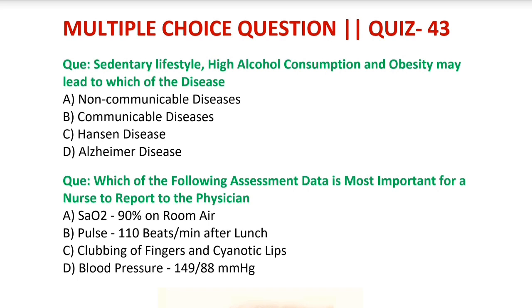Alzheimer's disease को senile dementia भी कहा जाता है — यानि कि बूढ़े लोगों में पागलपन. यह progressive disease होती है जो person की memory destroy कर देती है और mental function change कर देती है.